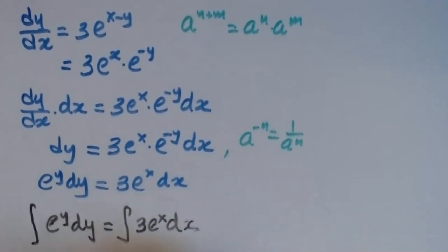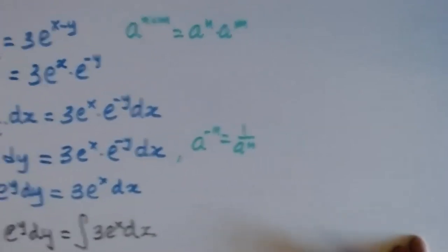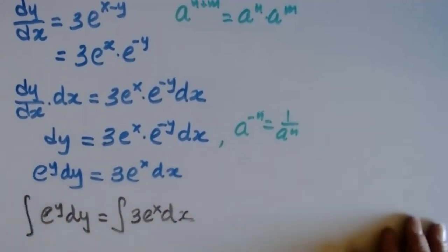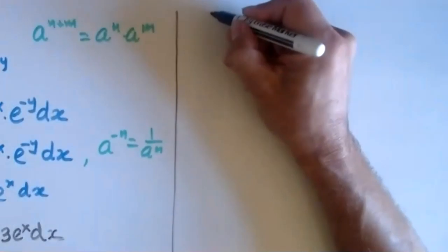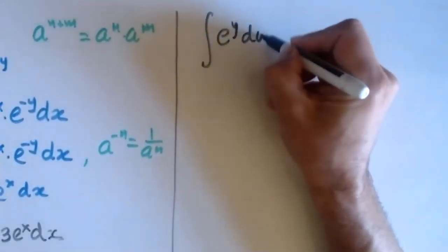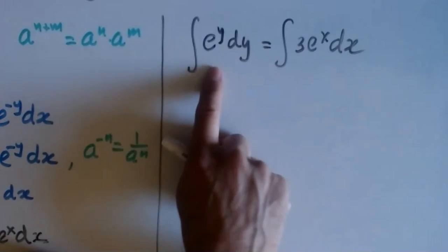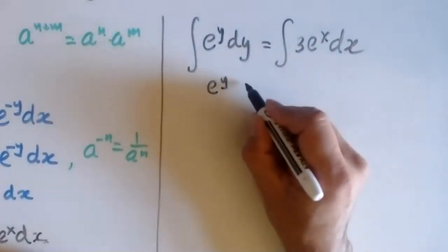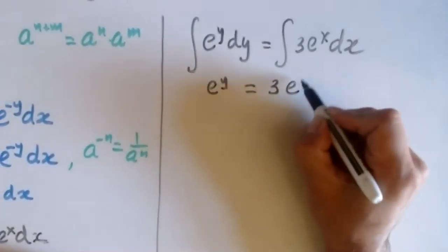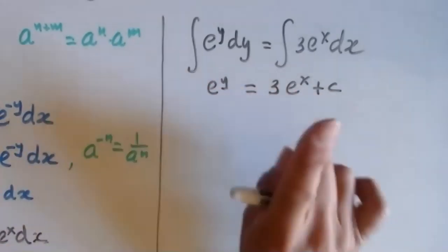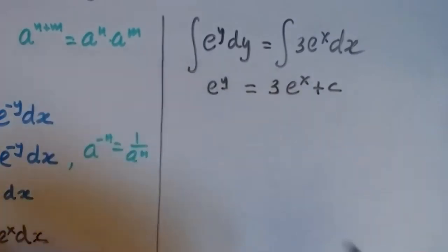Now we compute the antiderivatives. The integral of the exponential is the exponential itself. So the antiderivative of e^y is e^y, and the antiderivative of 3e^x is 3e^x plus a constant. The constants from both sides are collected into one constant C — we don't need two constants, one is enough.